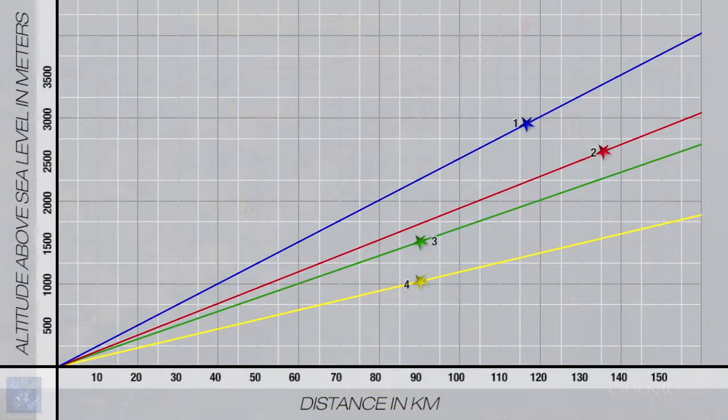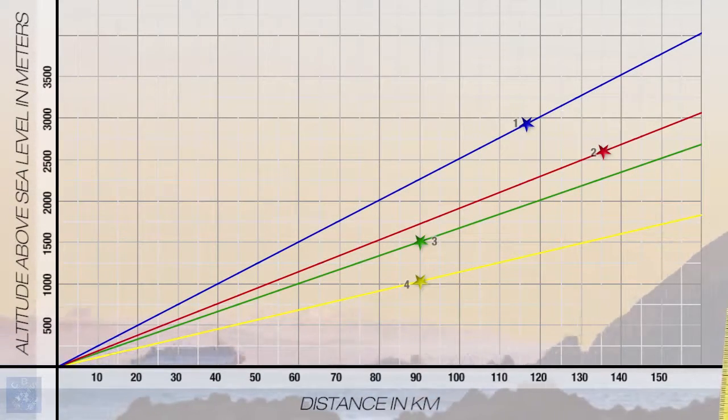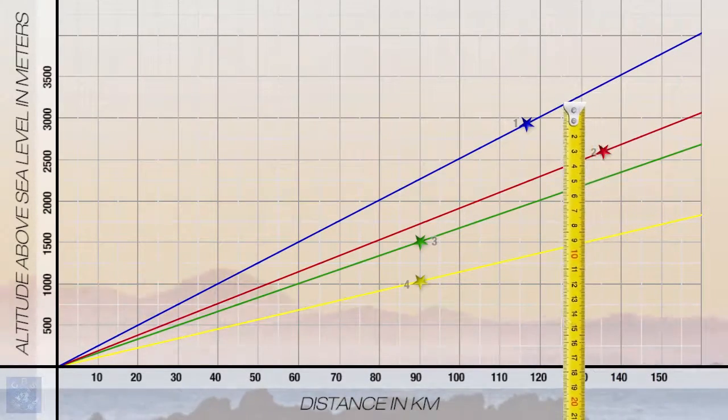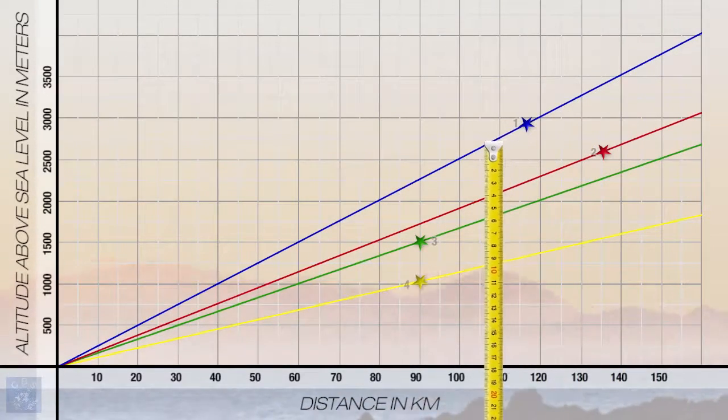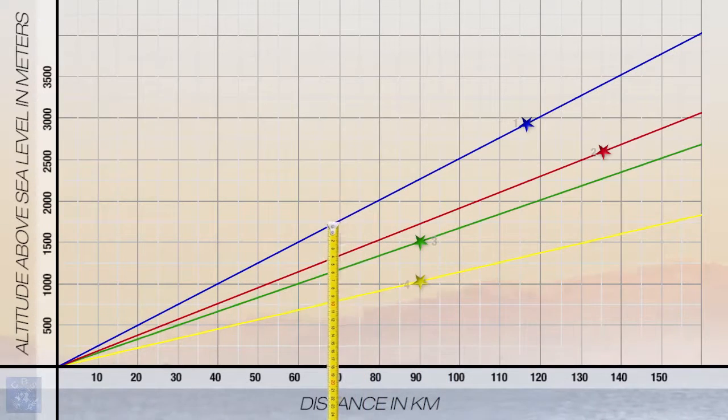So basically, you can draw a line perpendicular to the x-axis, and anywhere along the x-axis as it intersects with the lines on the graph, that is going to give us the proportions of the background.